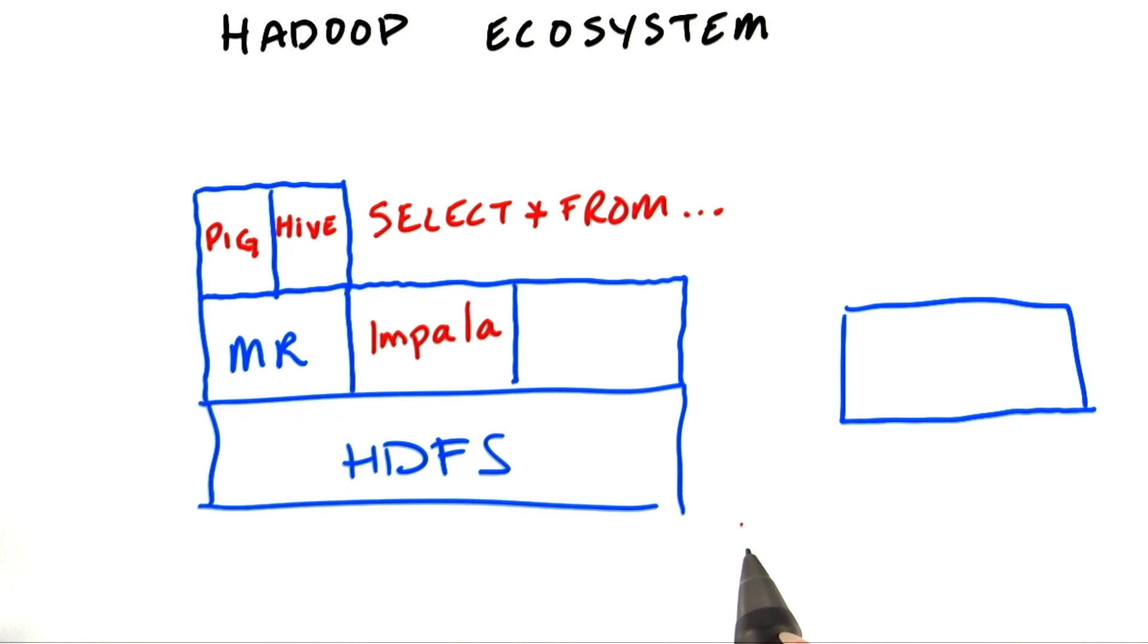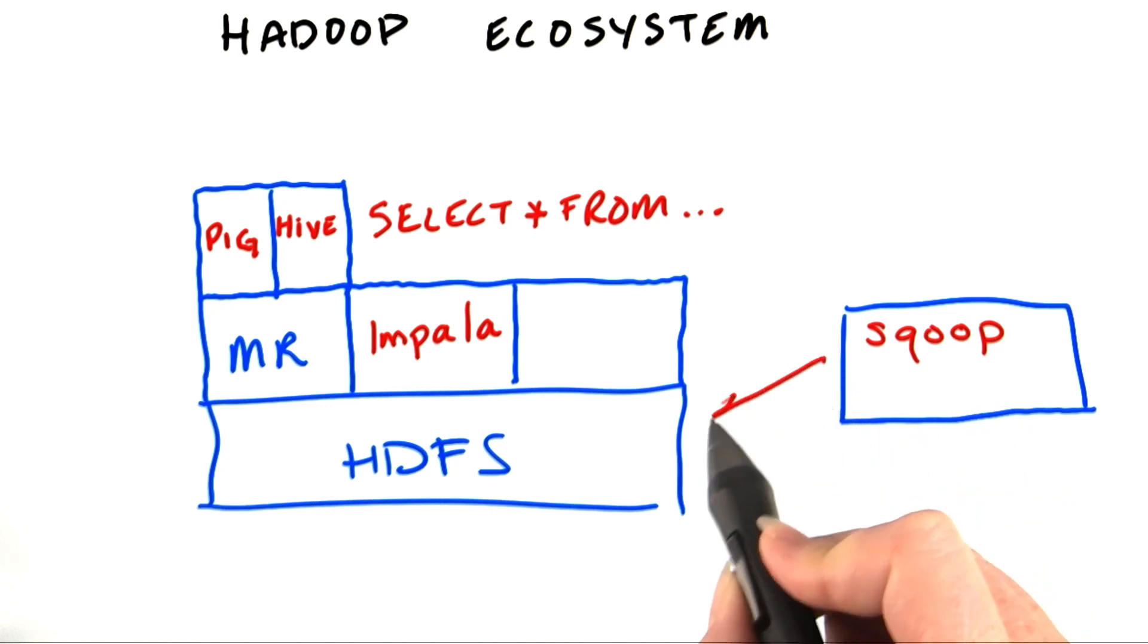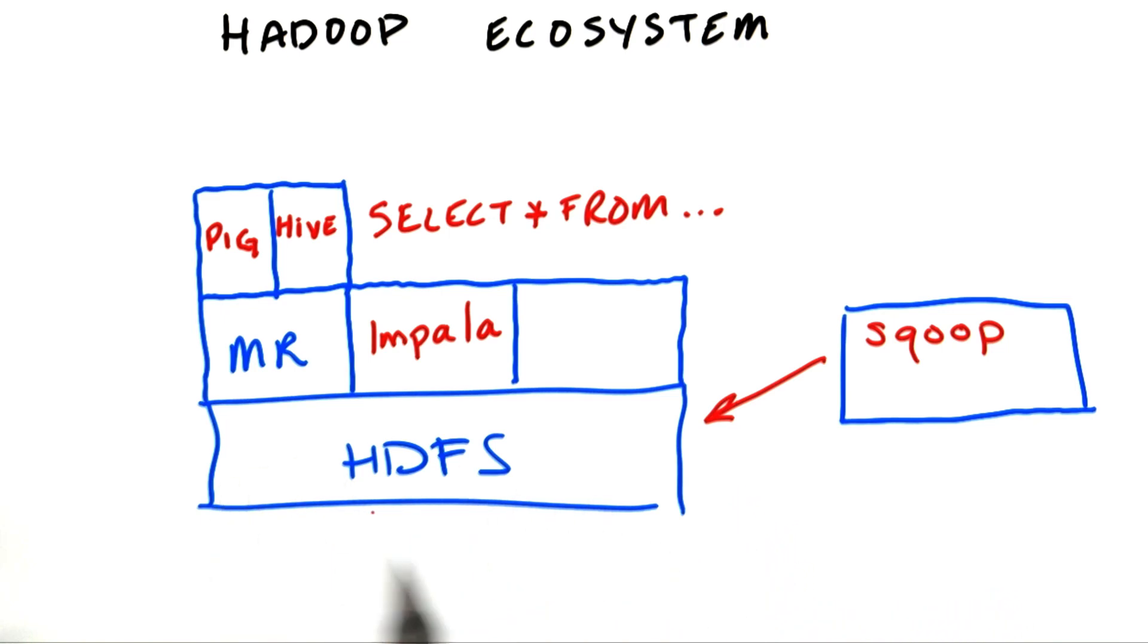Another project used by many people is Sqoop. Sqoop takes data from a traditional relational database such as Microsoft SQL Server and puts it in HDFS as delimited files so it can be processed along with other data on the cluster.